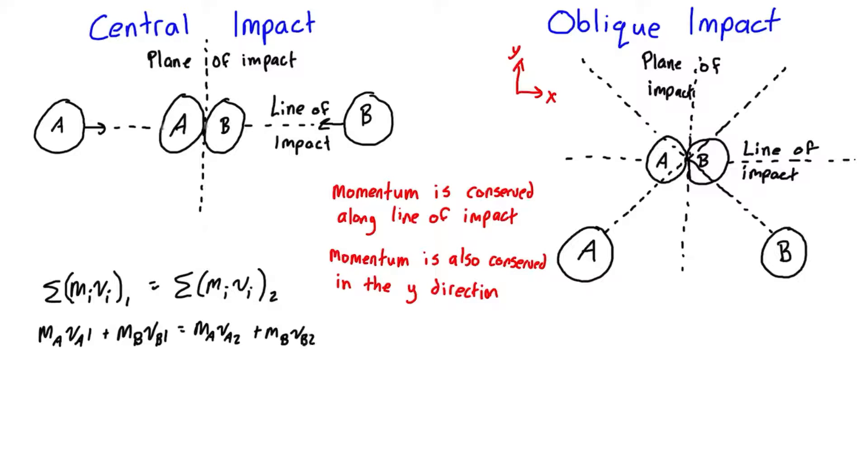The second equation is what we call the coefficient of restitution. It is basically e, which is the coefficient of restitution, is equal to (v_B2 - v_A2) / (v_A1 - v_B1).